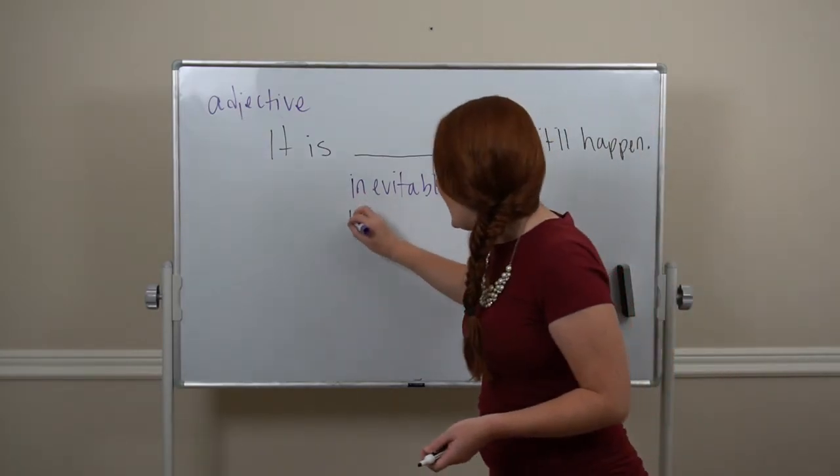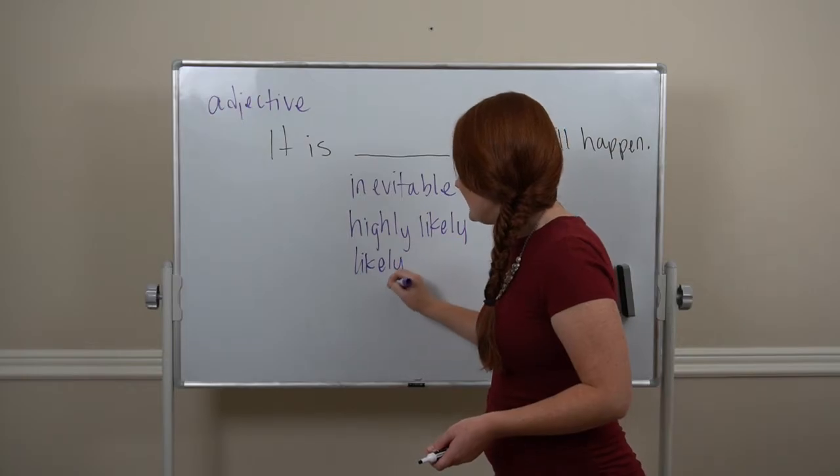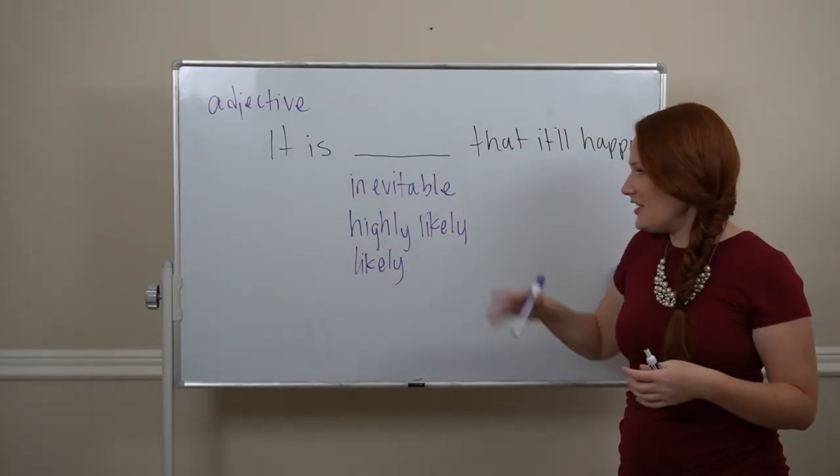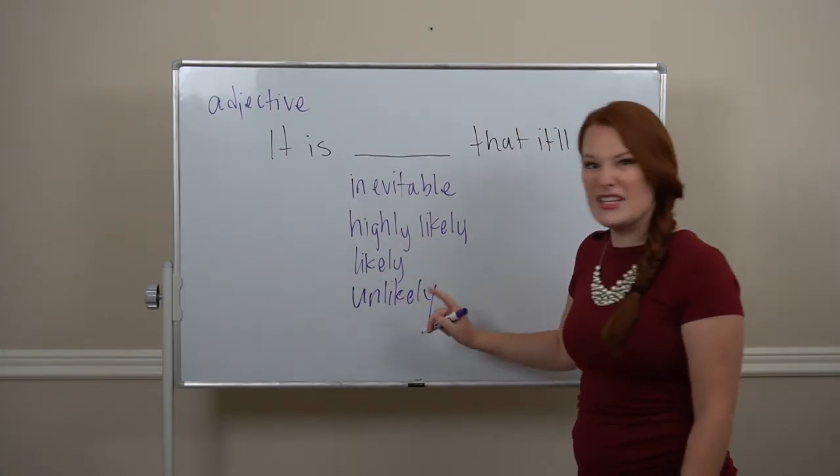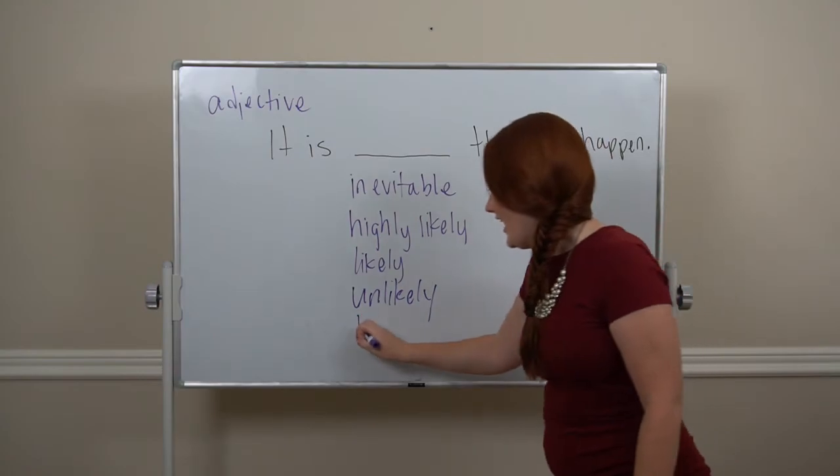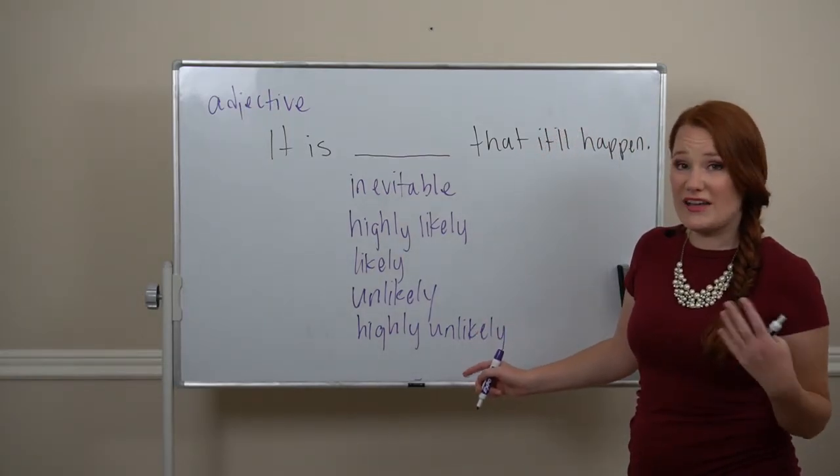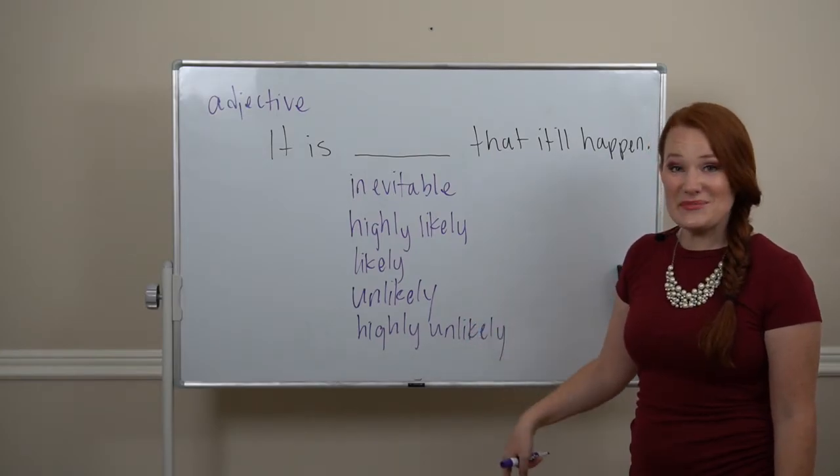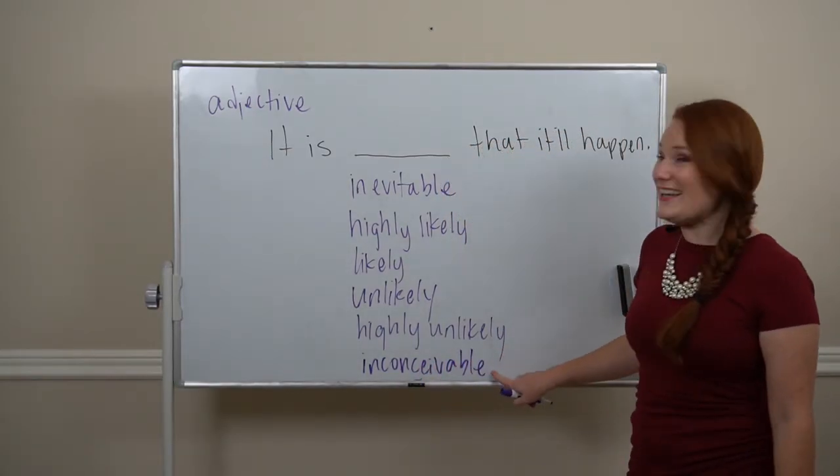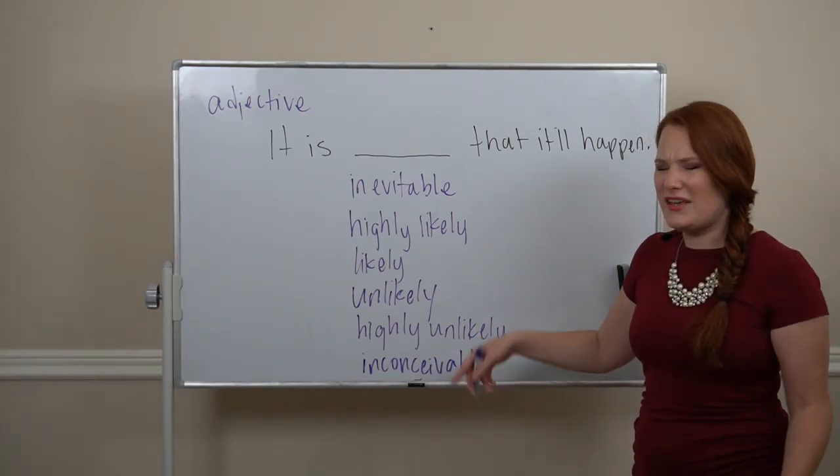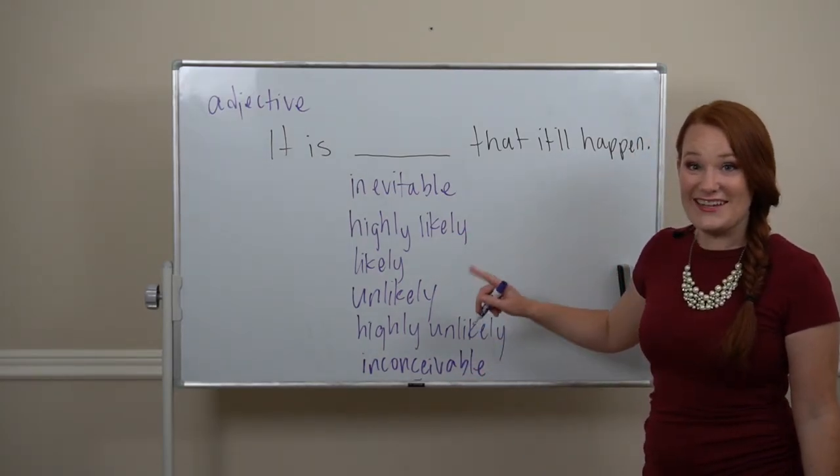I can also say highly likely, or just regular likely. Highly likely, kind of likely. Now we go into the negative ideas. It's unlikely. It means it probably won't happen. Or with highly, highly unlikely. It means it's almost sure, almost positive it won't happen. And on the extremely negative end, it's inconceivable that it'll happen. Inconceivable means I can't even think of it. It's crazy. There's no way it'll happen. It's inconceivable.